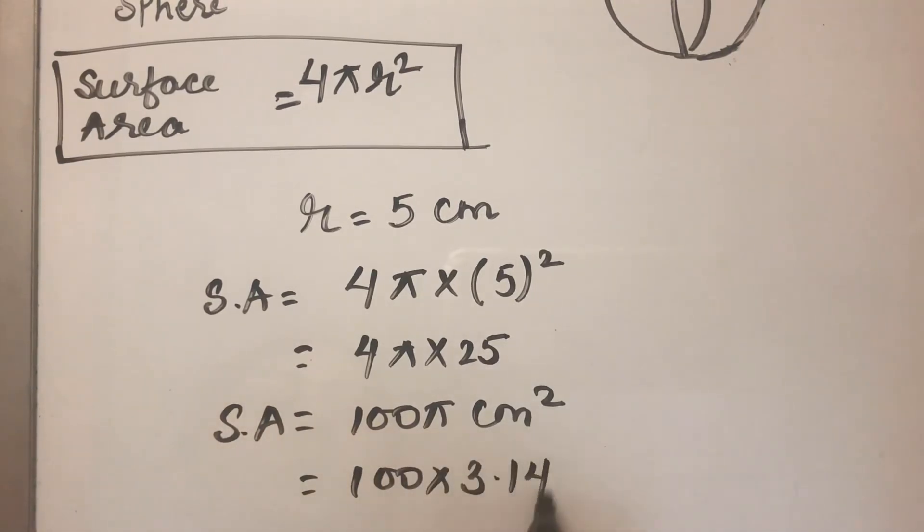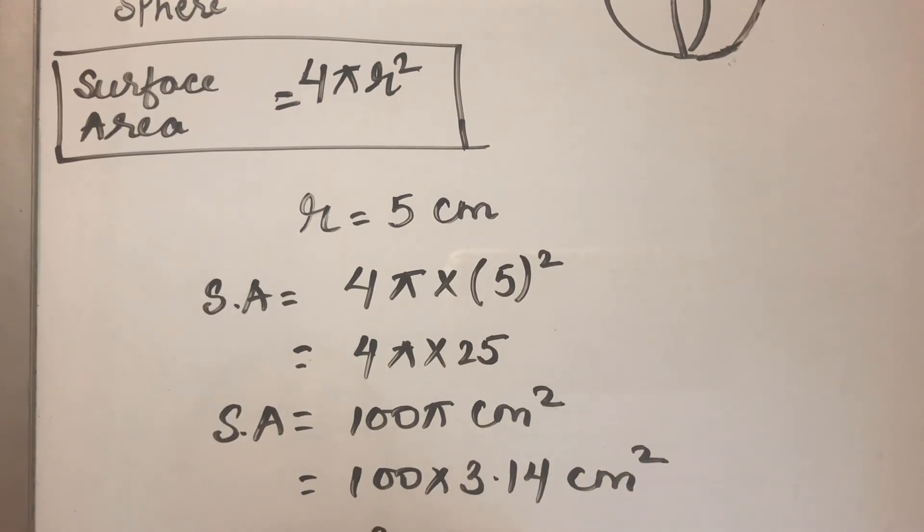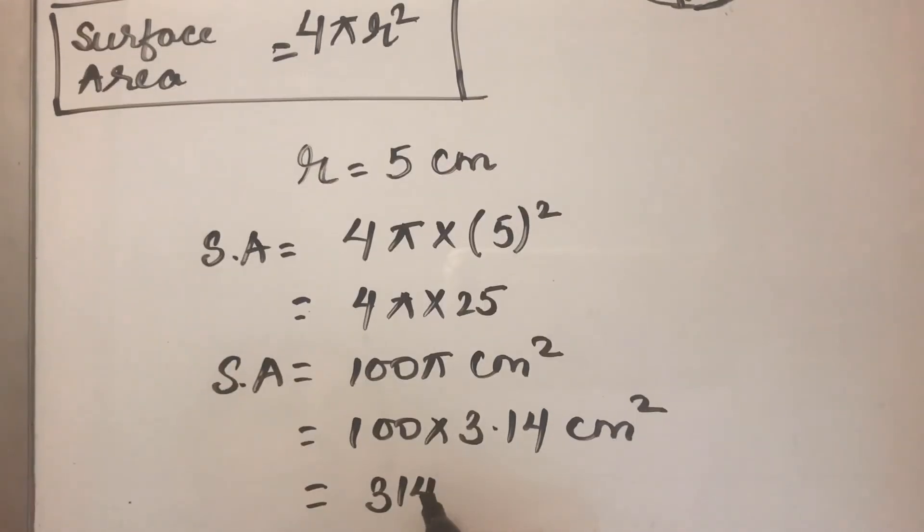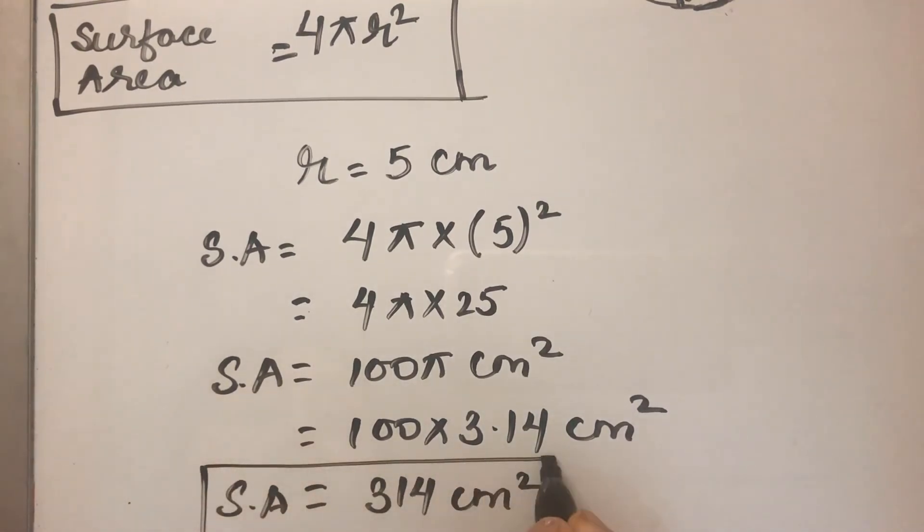If we want to solve it, this will be 100 × 3.14 centimeters squared, which is 314 centimeters squared. So the surface area of a sphere is four times the area of a circle.